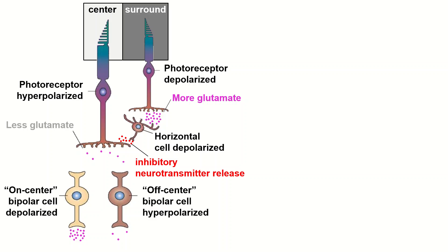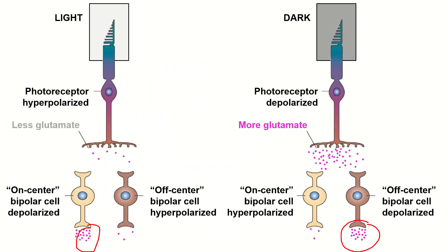When photoreceptors hyperpolarize in response to light they release less glutamate, which will cause a greater response from the on center cells since they depolarize when there is less glutamate, while causing a lower response from the off center cells since they hyperpolarize when there is less glutamate.